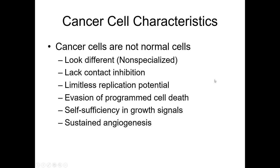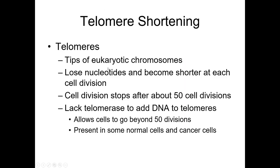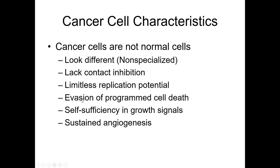Another two questions will be on cancer cell characteristics, so make sure you know what cancer cells are and what they are not. Cancer cells look different, they lack contact inhibition, they have limitless replication potential due to telomere shortening, and they evade some — not all — apoptotic triggers. By contrast, normal cells are specialized, have contact inhibition, have limited replication potential, and keep all of their apoptotic programming to respond to problems.